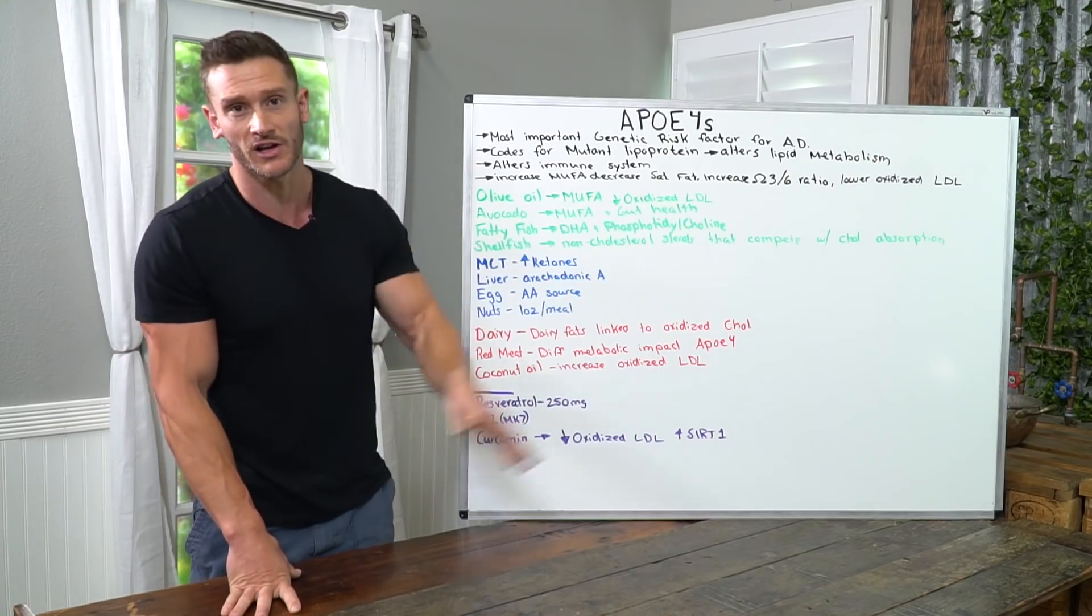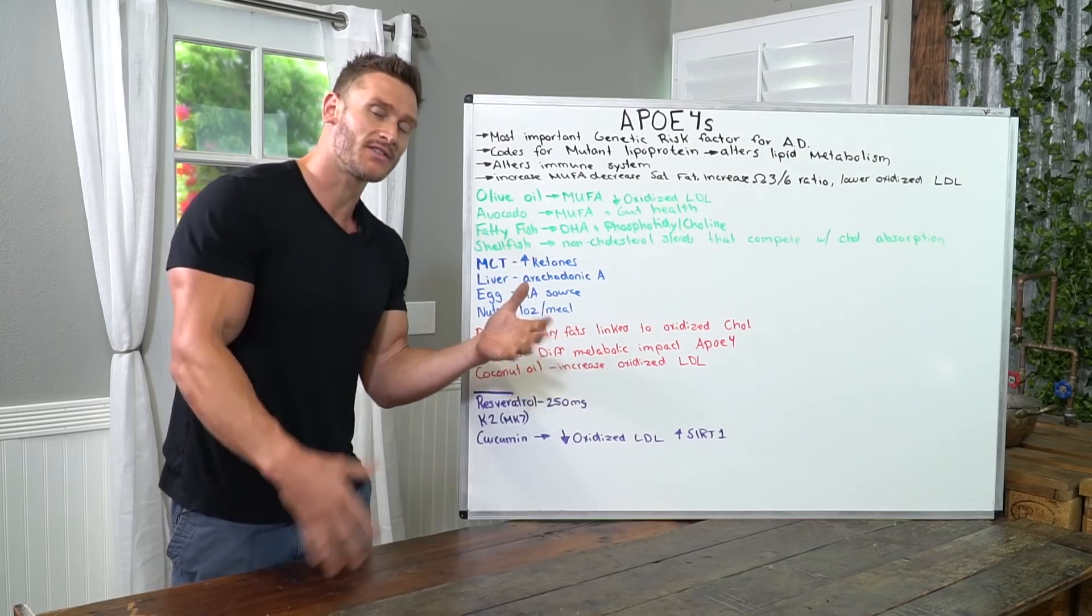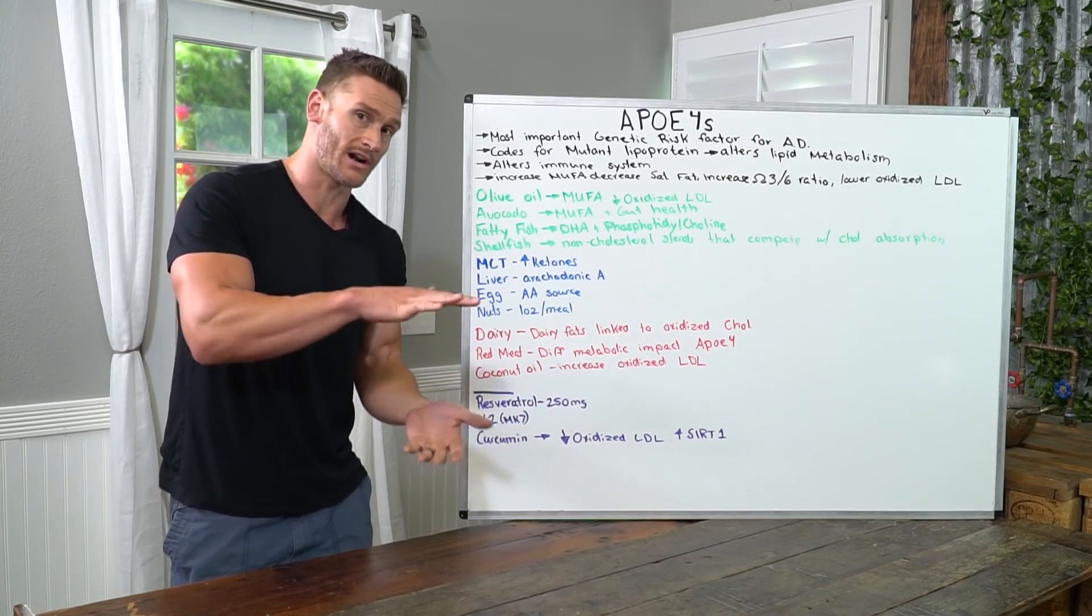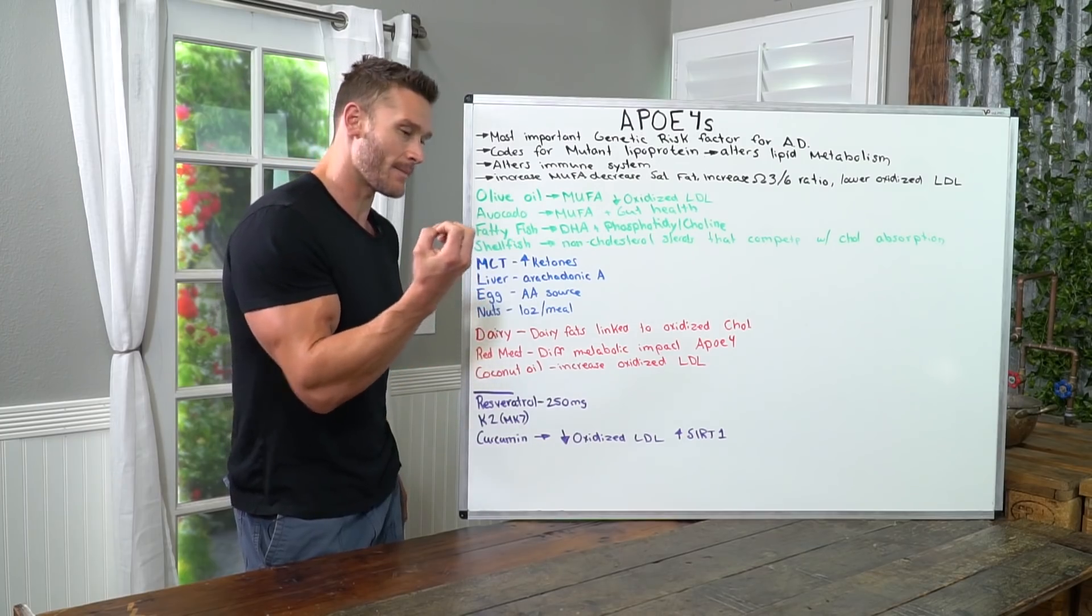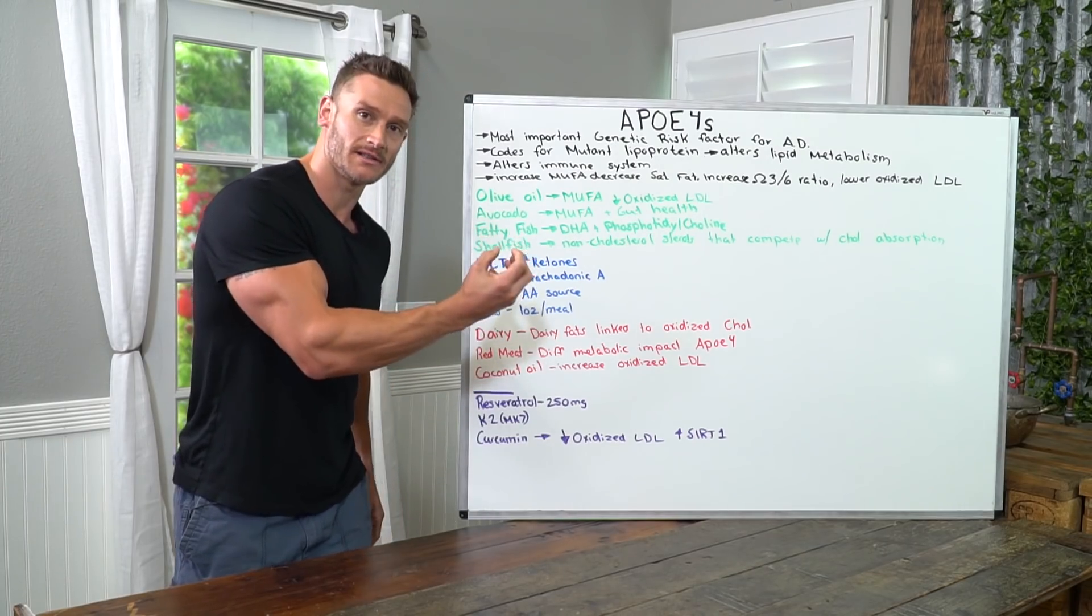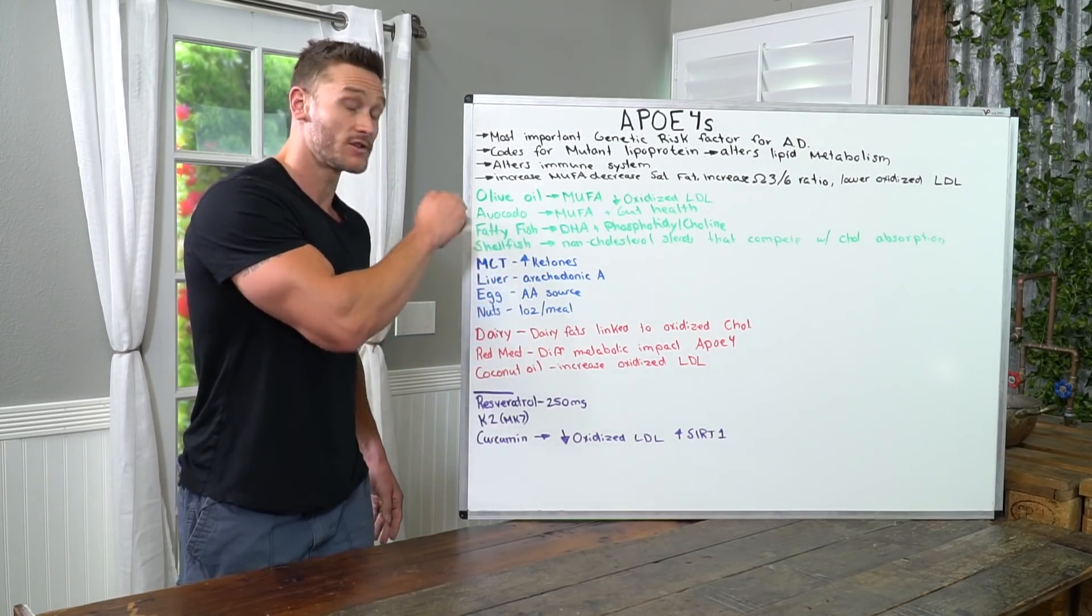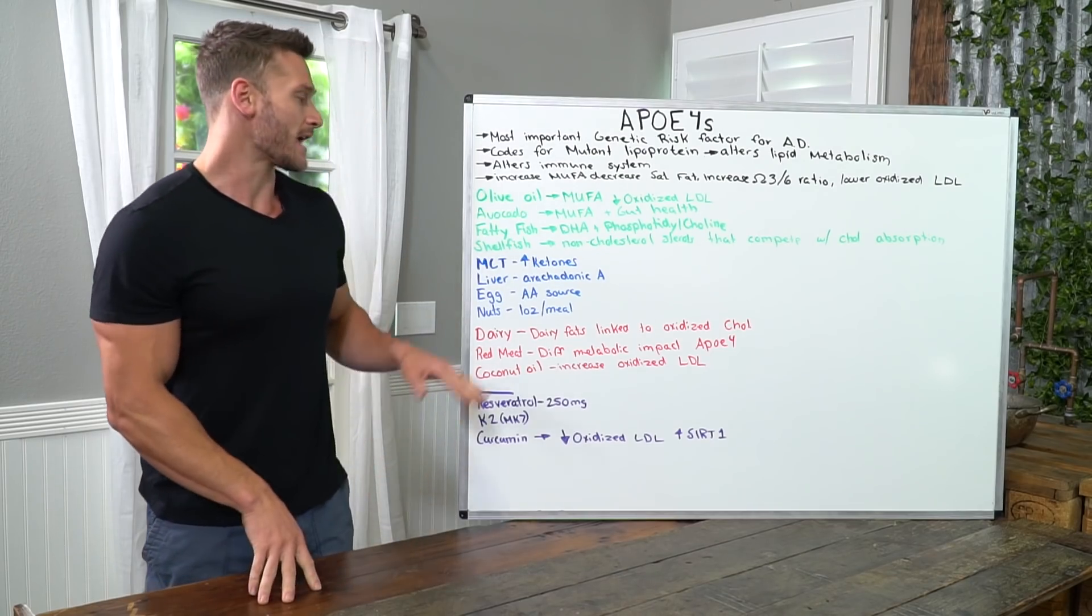So it makes it so that the cholesterol ends up being lower and our oxidized cholesterol lowers. So it kind of acts as like a placeholder for the cholesterol without actually having cholesterol. Point is, shellfish should be your friend with APOE4.